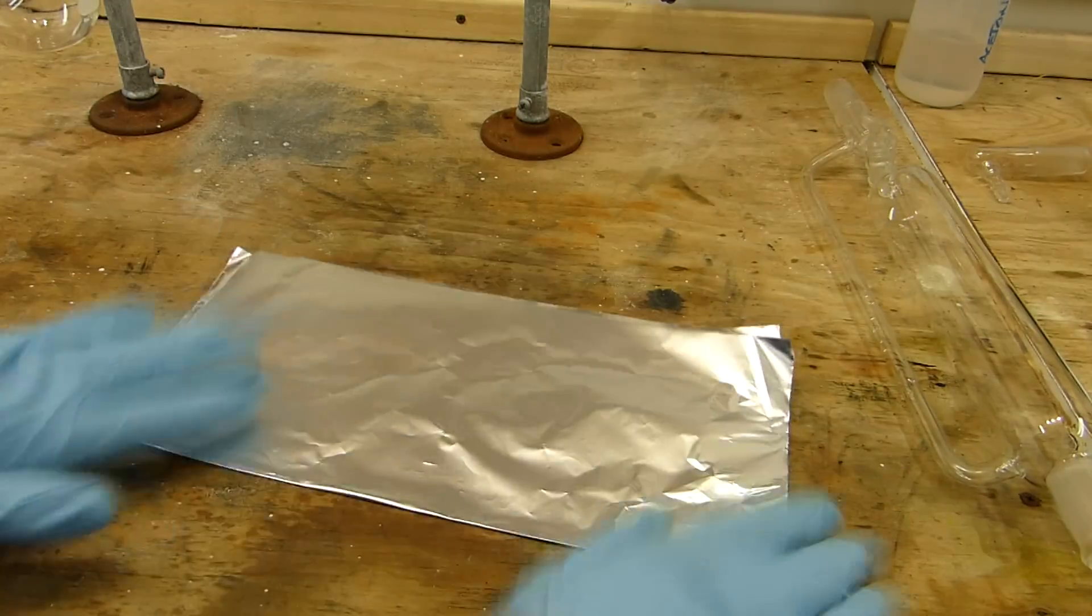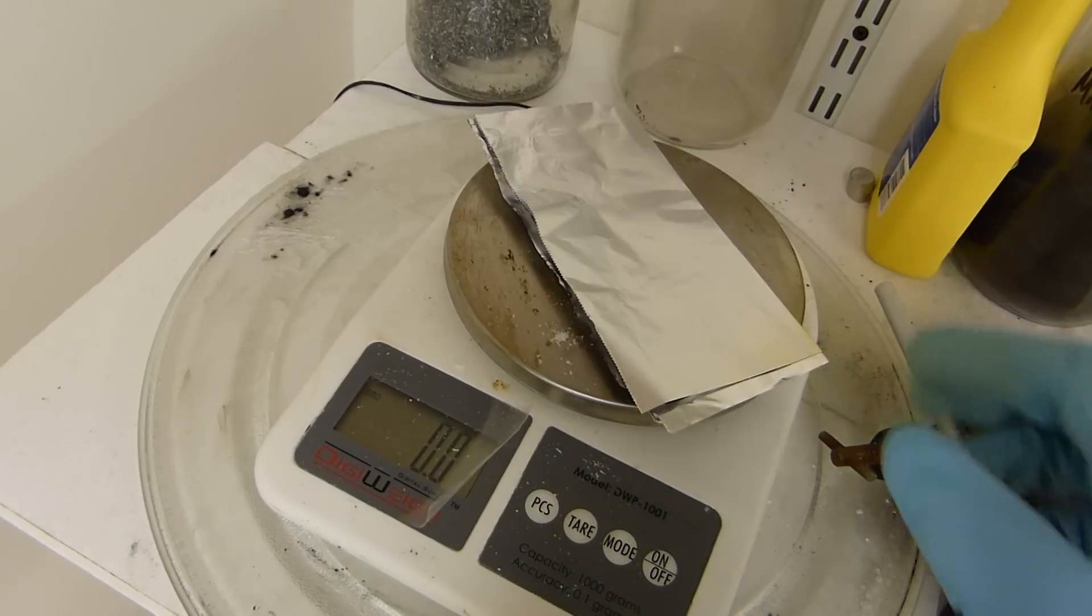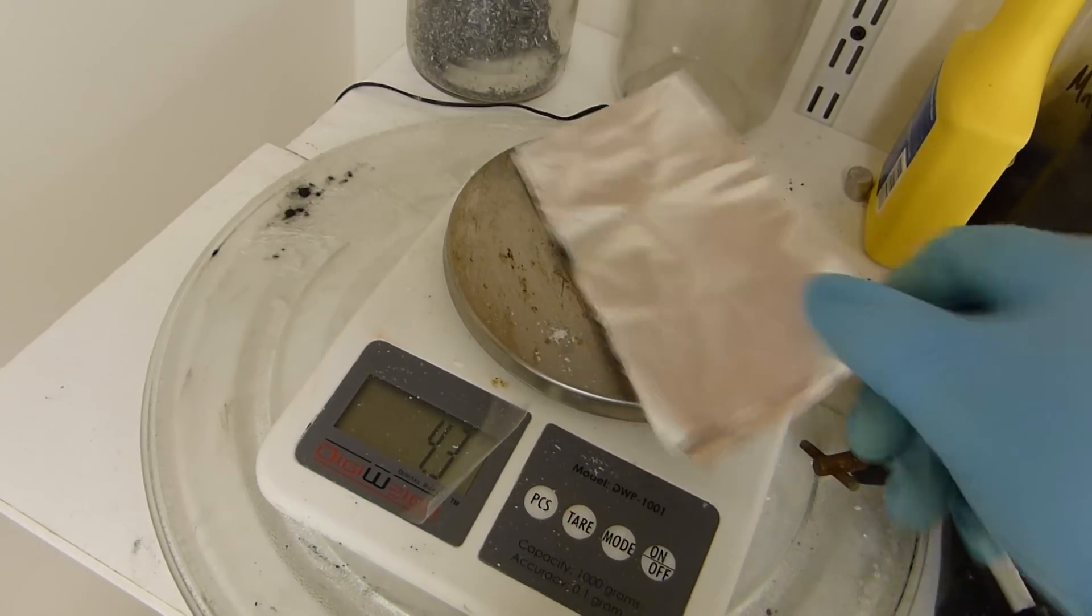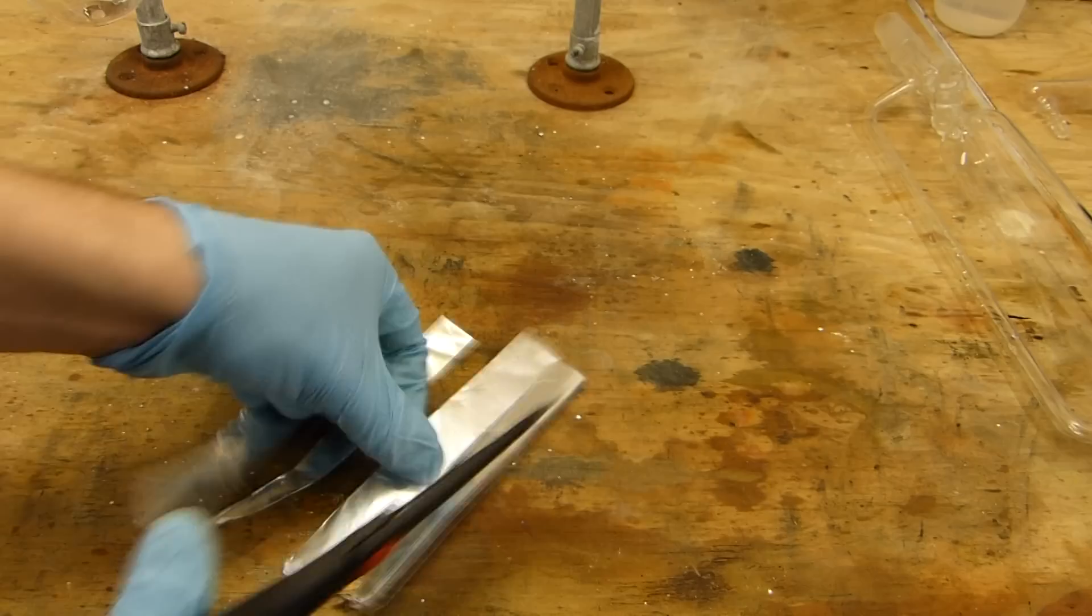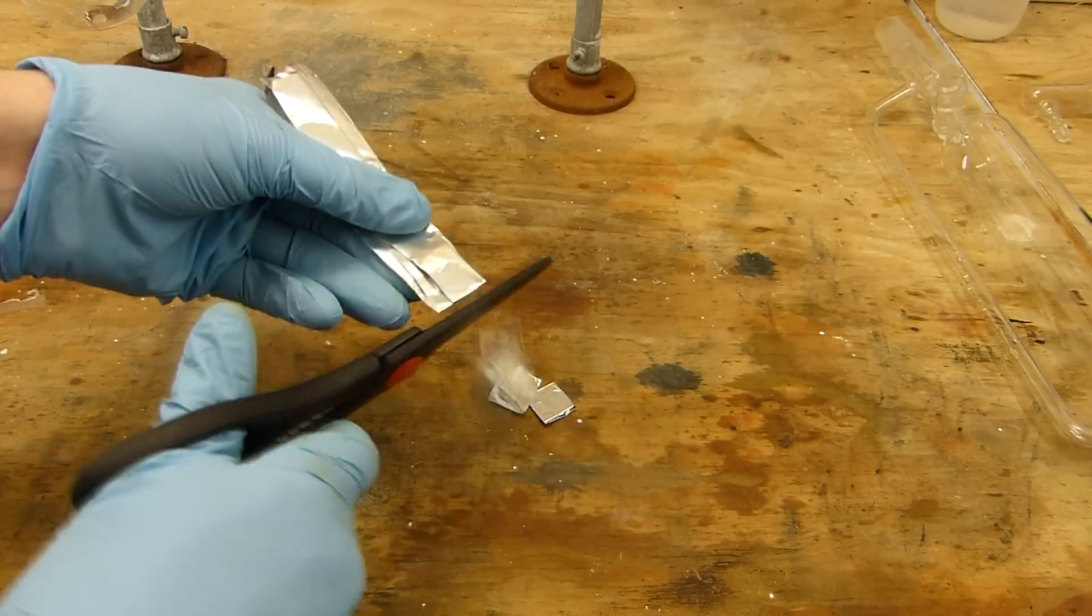I'll start by just weighing this piece of aluminum foil. I'll fold it a couple of times and weigh it to find it weighs about 4.3 grams, and then I'll proceed to cut it into confetti and add it to this flask.